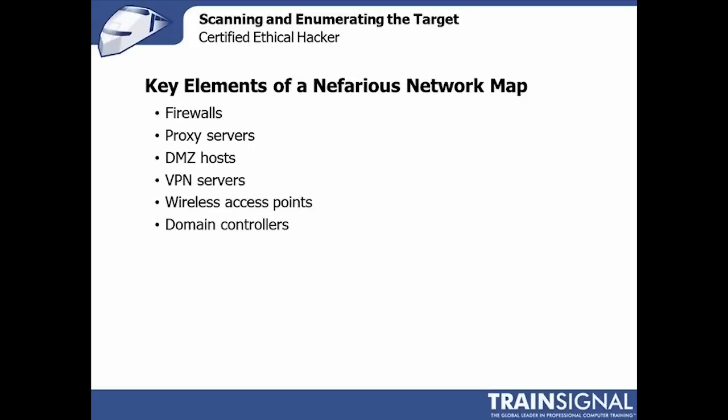Some key elements of a nefarious network map: during this process you definitely want to start mapping where firewalls are, where proxy servers are, where DMZ hosts and VPN servers are, access points, and domain controllers. All of these are going to be key elements to your attack because compromising them is extremely valuable and often enables you to compromise other systems later on.